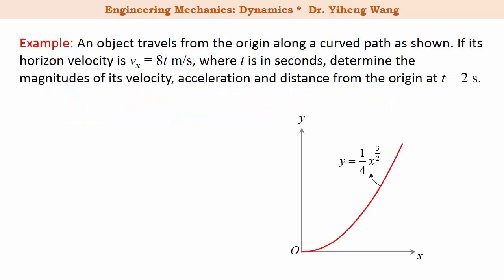Let's look at this example. The curved path this object follows is given. Its vertical position y at any given time is related to its horizontal position x by this equation that y equals to one quarter times x to the three halves power. Also the horizontal velocity vx as a function of time is given: vx equals to eight times t.